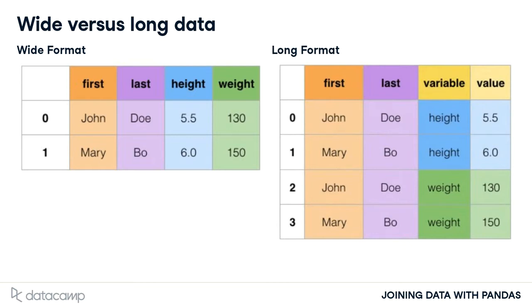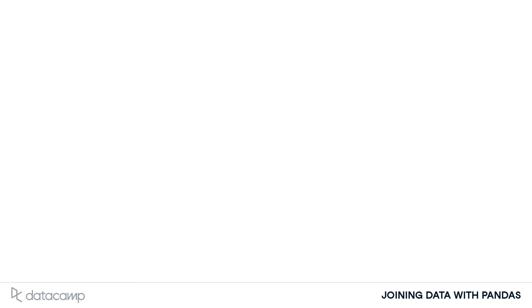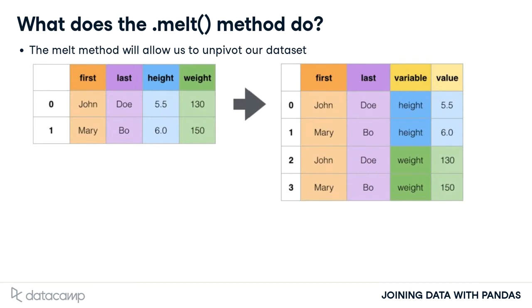However, long formatted data is often more accessible for computers to work with. The MELT method will allow us to unpivot or change the format of our dataset. In this image, we change the height and weight columns from their wide horizontal placement to a long vertical placement.